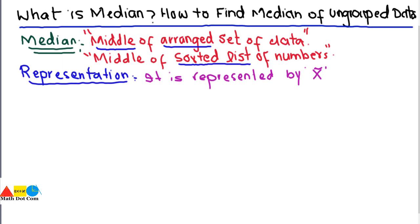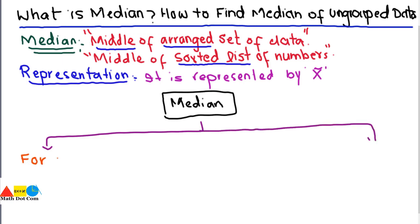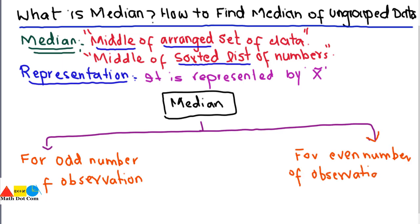Now we move to the formula. There are two types of formulas: one for odd number of observations and one for even number of observations. Today we are focusing on ungrouped data only. The ungrouped data is further divided into two parts depending on the number of observations — odd or even — and the formula differs accordingly.